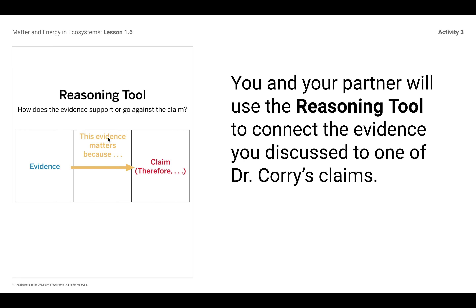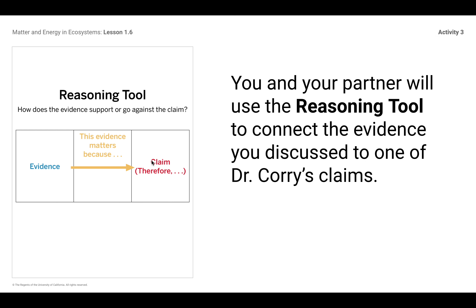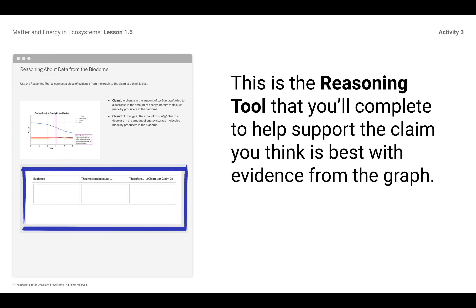Tell me why what you see on that graph matters, and then state your claim — therefore, claim number one or claim number two. Please don't just say 'claim number one' or 'claim number two.' I want you to use the words and answer the question. Tell me what that claim says. This reasoning tool in Activity 3 is just to help you put your thoughts down on paper.